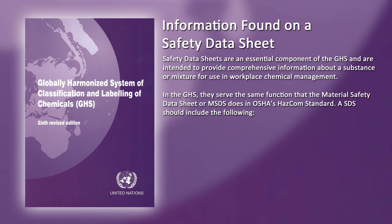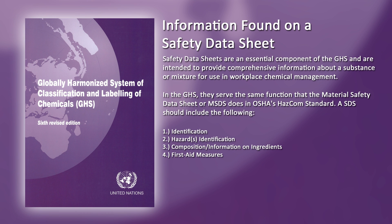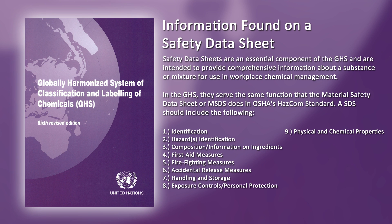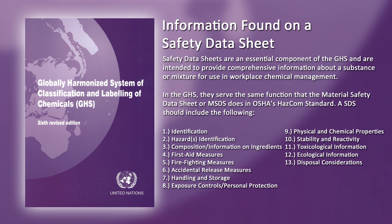Safety data sheets should include the following: identification; hazard identification; composition and information on ingredients; first aid measures; fire fighting measures; accidental release measures; handling and storage; exposure controls and personal protection; physical and chemical properties; stability and reactivity; toxicological information; ecological information; disposal considerations; transport information; regulatory information; and other information.